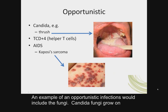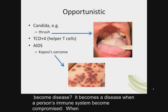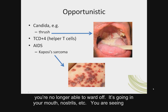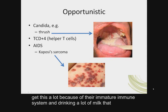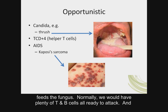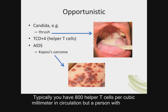An example of an opportunistic infection would include fungi. Candida fungi grow on the skin and in parts of the body right now. But it becomes disease when a person's immune system becomes compromised — when you're no longer able to ward it off. You can see a person with candida infection in the mouth, called thrush. Babies get this a lot because of their immature immune system and drinking milk that feeds the fungus. Normally we would have plenty of T and B cells ready to attack.